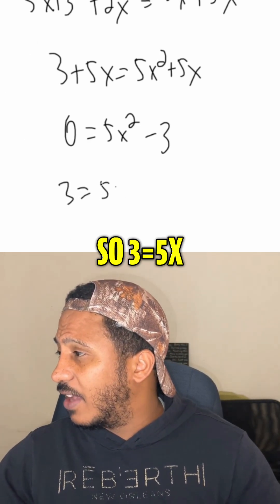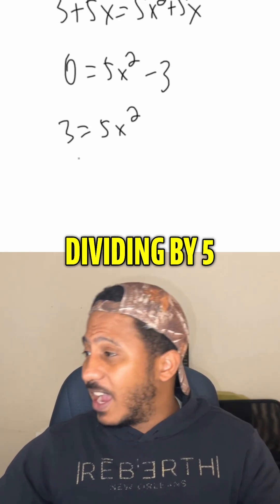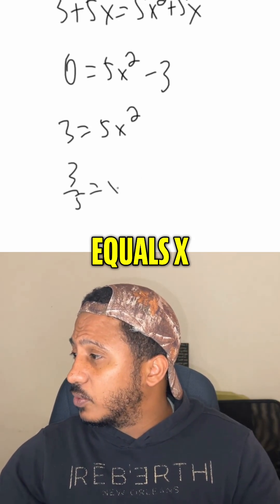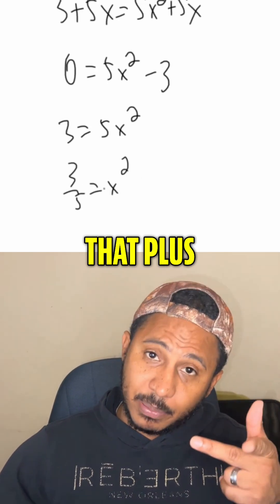3 equals 5x squared. Divided by 5, we get 3 fifths equals x squared. And then taking the square root, don't forget that plus or minus, right?